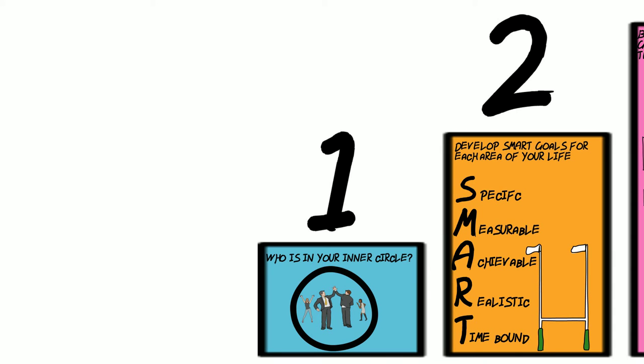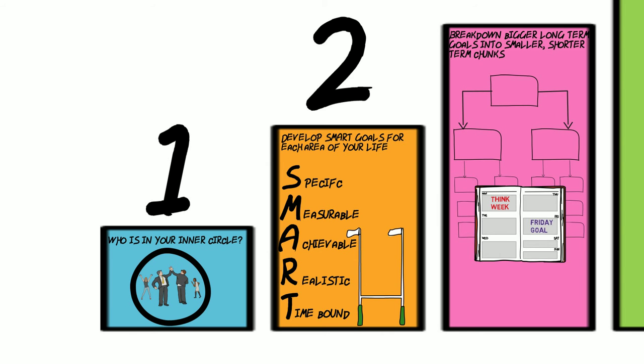So, the seven steps: make sure you know who's in your inner circle — and fill it, as need be, with people who build you up and support you. Set a SMART longer-term goal, and break down that goal into smaller chunks, milestones.